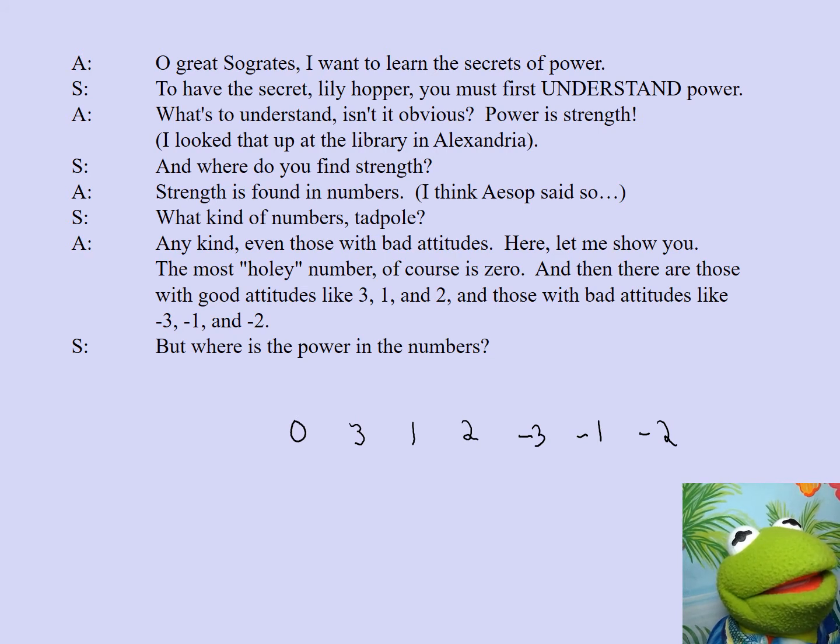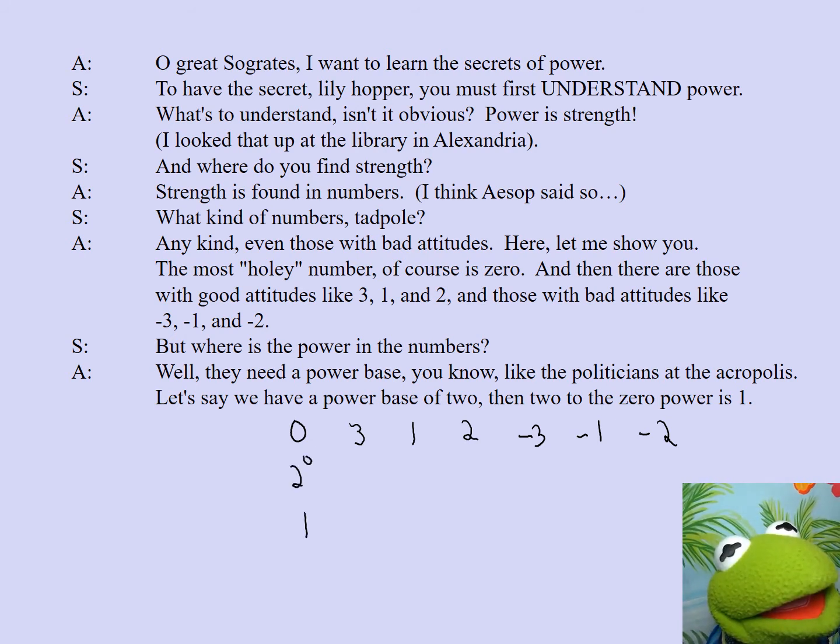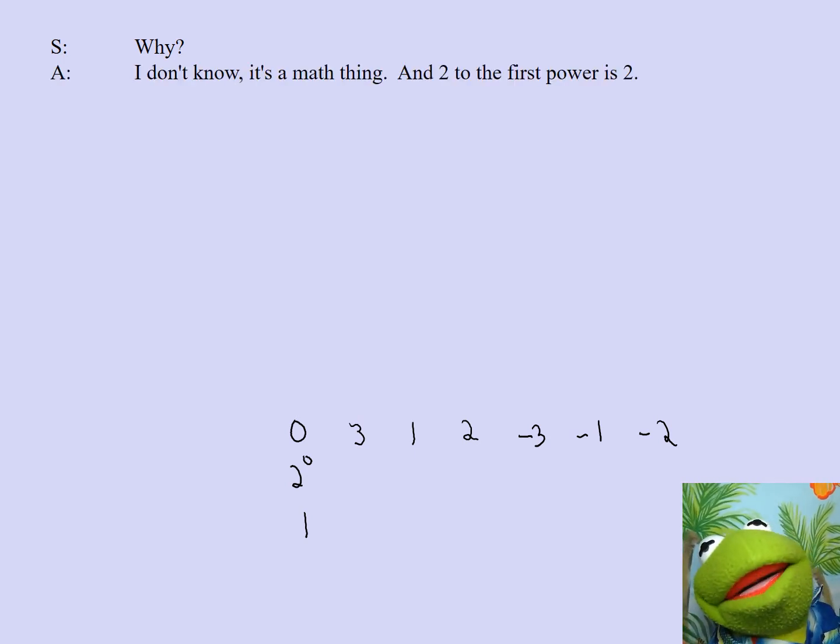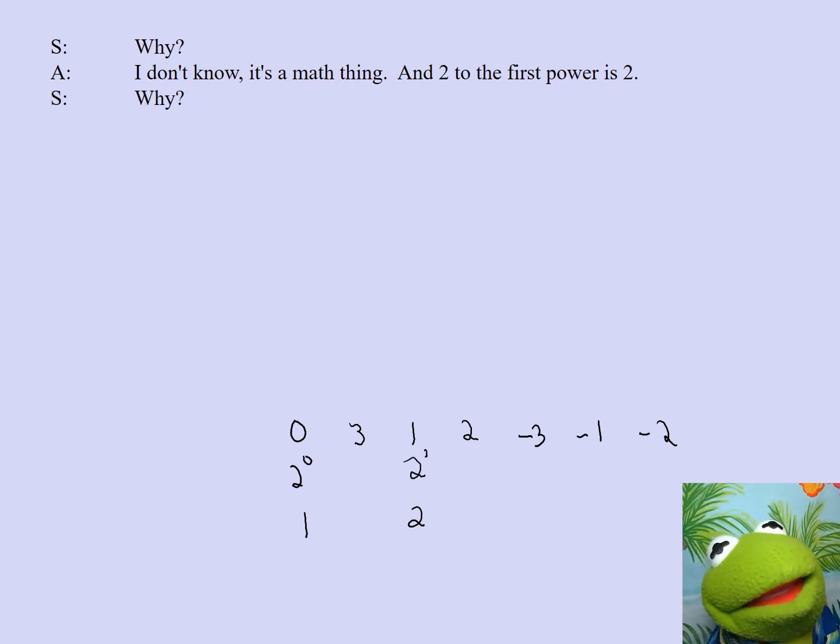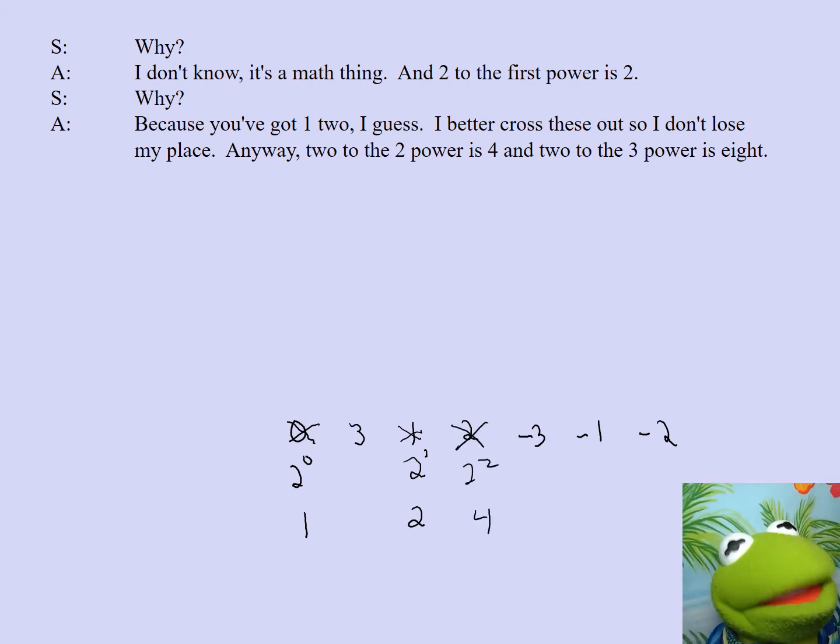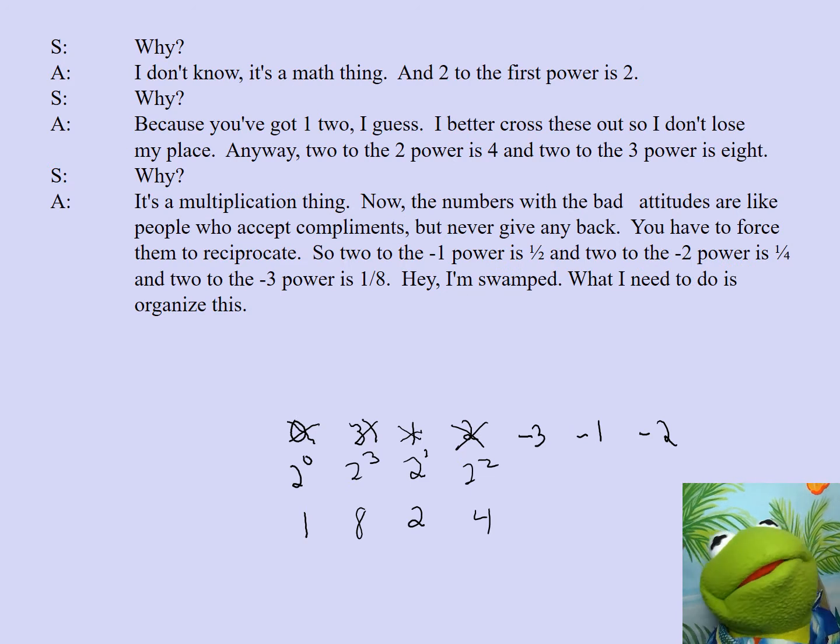But where is the power in the numbers? Well, they need a power base, you know, like the politicians at the Acropolis. Let's say we have a power base of two. Then two to the zero power is one. Why? I don't know. It's a math thing. And two to the first power is two. Why? Because you've got one two, I guess. I better cross these out so I don't lose my place. Anyway, two to the two power is four. And two to the third power is eight. Why? It's a multiplication thing.